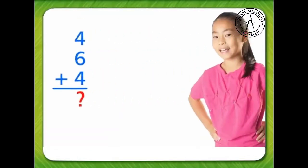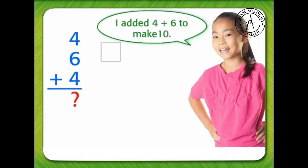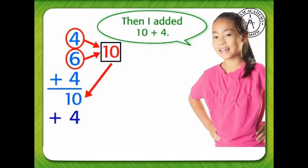Here's another way to group the addends. First add 4 plus 6. Now add 10 plus 4.